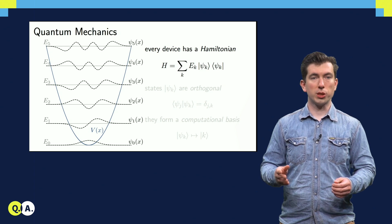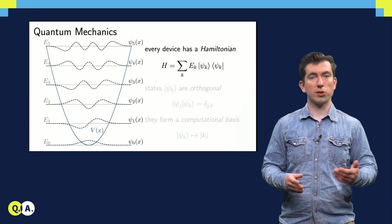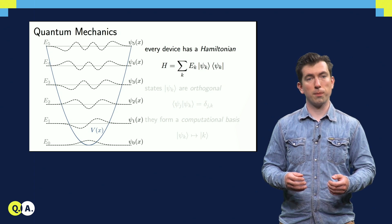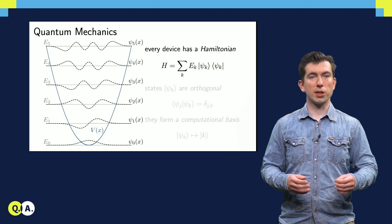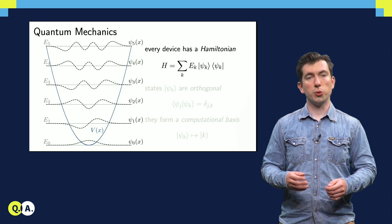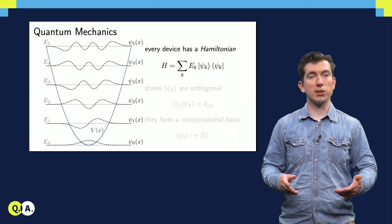One such device, which we see quite frequently in quantum mechanics, is the harmonic oscillator. These devices are described by a Hamiltonian, which is a matrix that assigns an energy E_k to each of its eigenstates, or preferred basis states, psi_k.